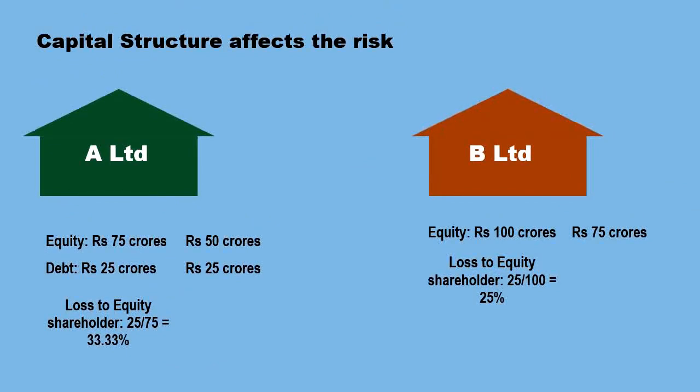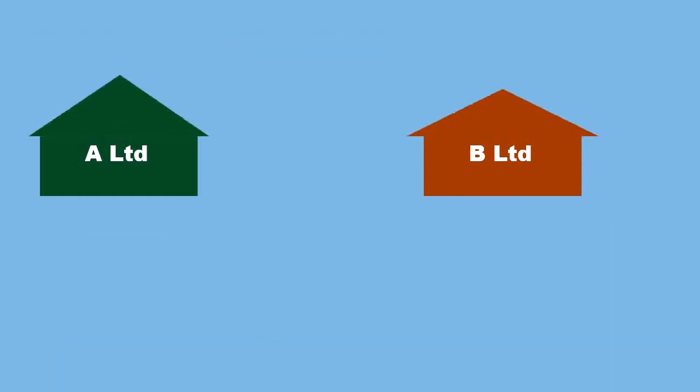Hence, betas of two companies may not be comparable straight away even though they are in the same industry and have the same asset base, because of their different capital structures. So if the betas of two companies are not comparable because of their capital structure, how do we make them comparable? To make them comparable, we undertake a process of ungearing and regearing of beta.